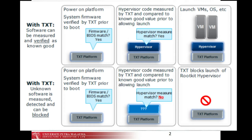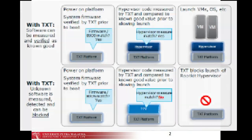The first step is power on the platform. The system firmware is verified by TXT prior to boot. After the firmware or BIOS match, the hypervisor code is measured by TXT and compared to a known good value prior to allowing launch. After the hypervisor measure is checked but does not match, TXT blocks the launch of the rootkit hypervisor.